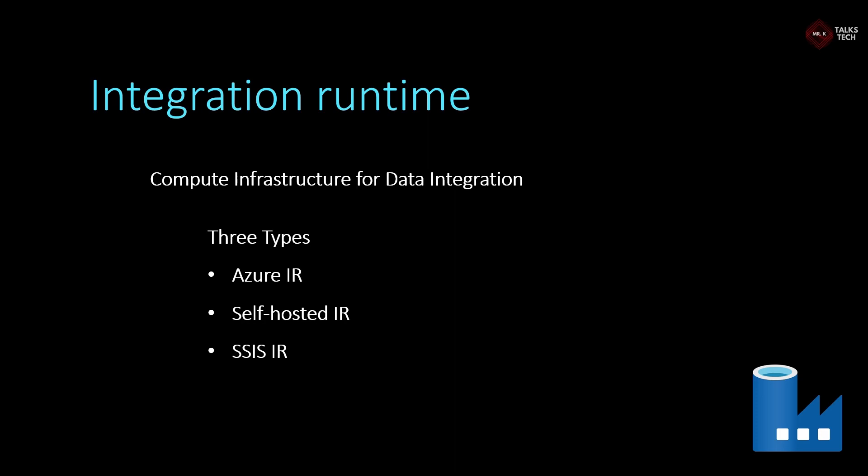The next type is SSIS integration runtime. In this case, we have on-premise SSIS packages, and there is also SQL Server related content. We move the SSIS packages into the cloud, move to Azure, and use the integration runtime to execute them. So there are three types, and the most used are Azure integration runtime and self-hosted integration runtime.